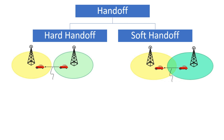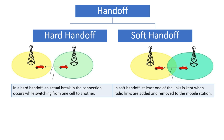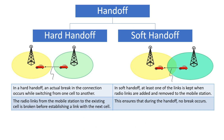Now the comparison between hard handoff and soft handoff. In hard handoff, an actual break in connection occurs while switching from one cell to another. Whereas in soft handoff, at least one of the links is kept when radio links are added and removed to the mobile station. In hard handoff, the radio link from the mobile station to the existing cell is broken before establishing a link with the next cell. Whereas in soft handoff, it ensures that during the handoff no break occurs.